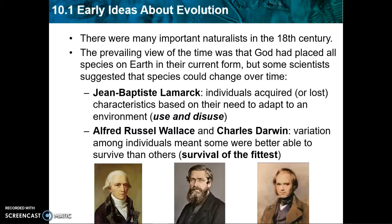Alfred Russell Wallace and Charles Darwin both had essentially the exact same idea about evolution — what we call survival of the fittest, or natural selection. They noticed that there was naturally occurring variation among the individuals of a species, meaning some could survive better than others. The ones that survived could pass down their genes to their offspring. Wallace and Darwin got the right mechanism: it had to be inheritance of traits from parents that explained why certain traits became more common in a species.